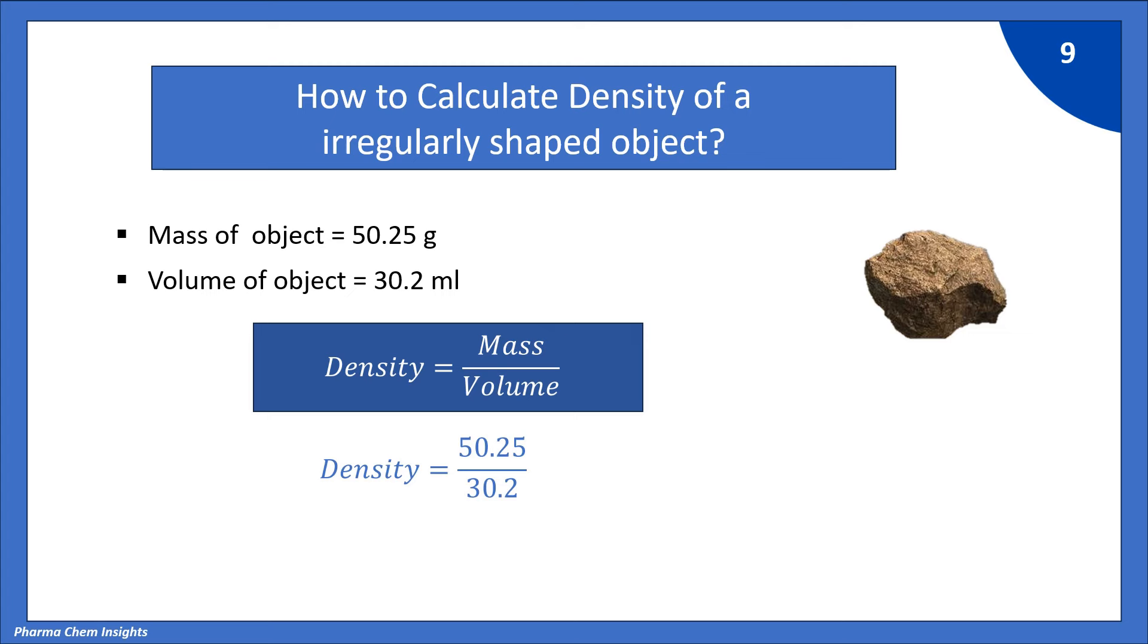So, by putting the values mass is 50.25 divided by volume that is 30.2 we get 1.66 g per ml. ml is equivalent to cm cube. Please note that. So, density of given object is 1.66 g per cm cube.